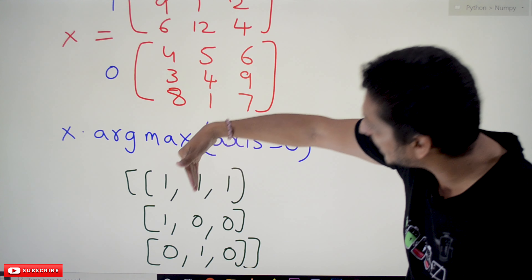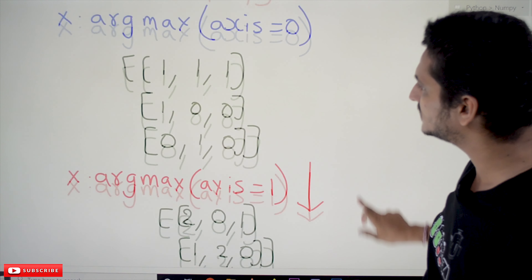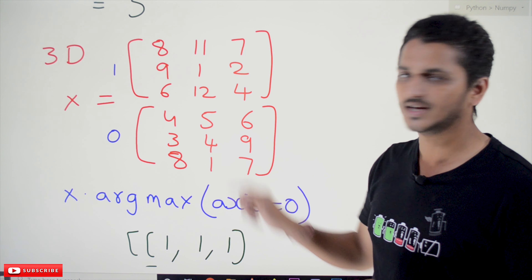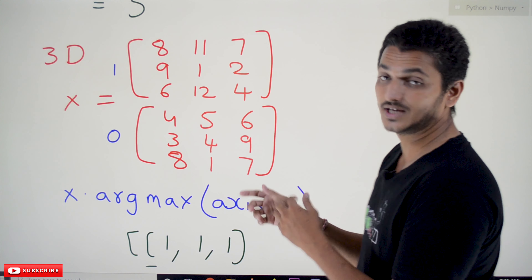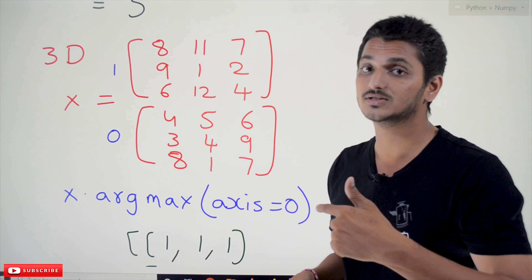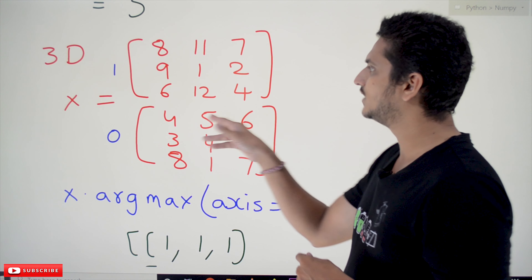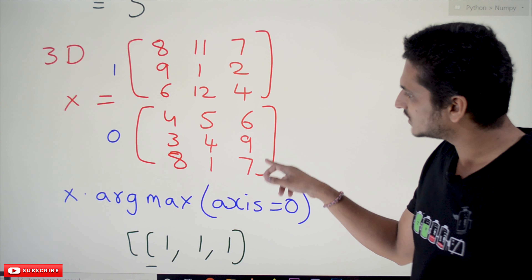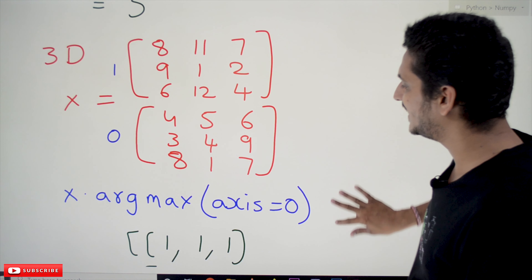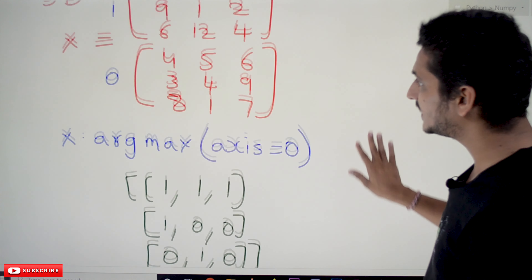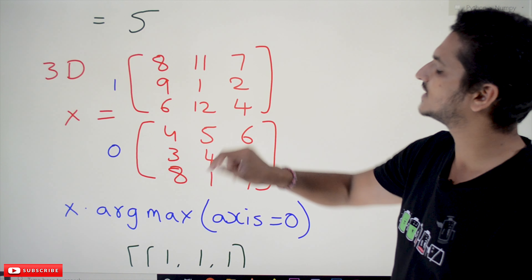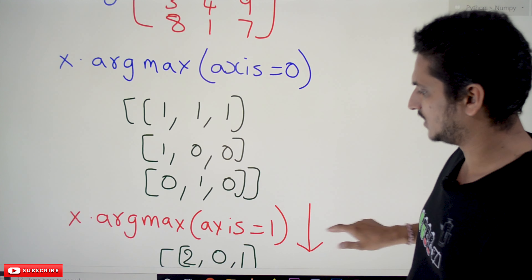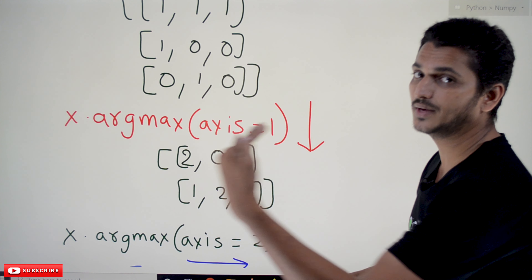For axis=1 in the three-dimensional array, it works along the row dimension within each 2D matrix. For the first matrix, [4, 3, 8] gives maximum 8 at index 2; [5, 4, 1] gives maximum 5 at index 0; [6, 9, 7] gives maximum 9 at index 1. For the second matrix, [8, 9, 6] gives maximum 9 at index 1; [11, 1, 12] gives maximum 12 at index 2; [7, 2, 4] gives maximum 7 at index 0. The output is [[2, 0, 1], [1, 2, 0]].